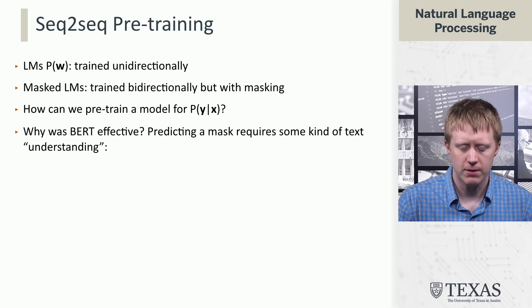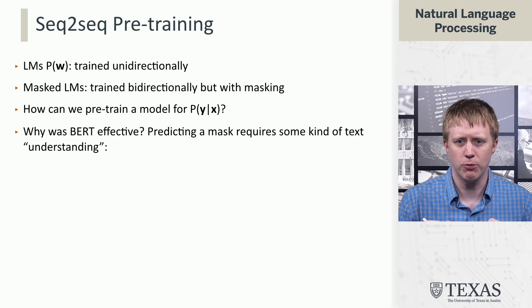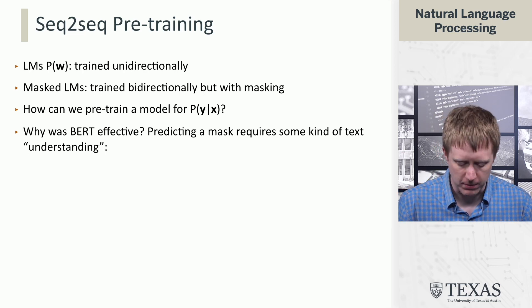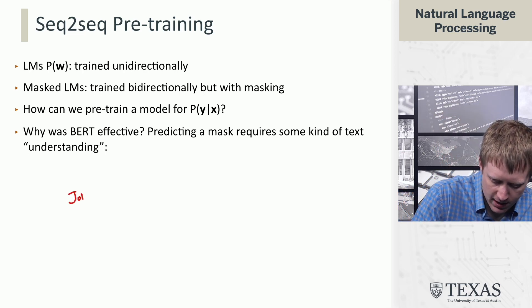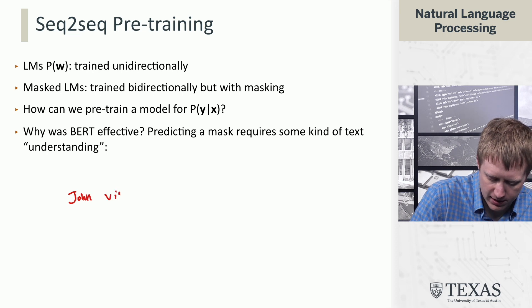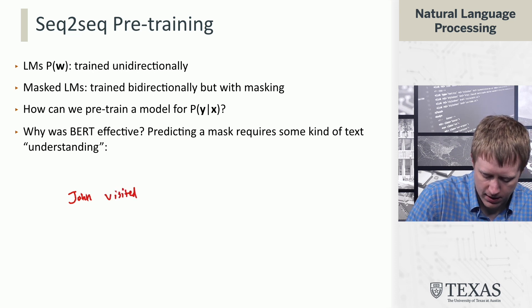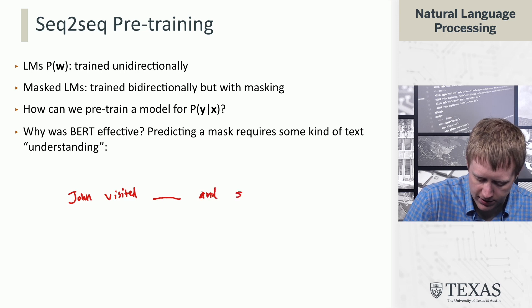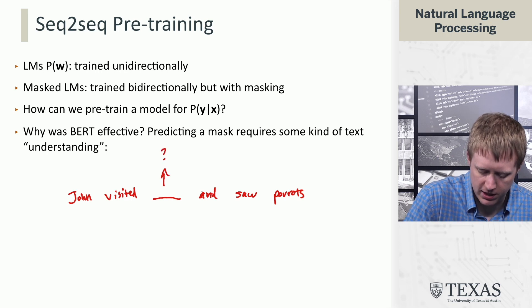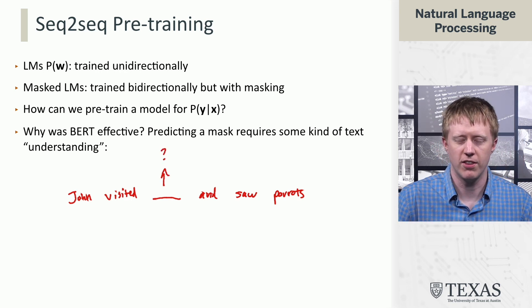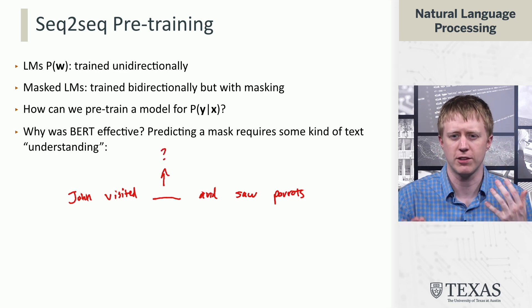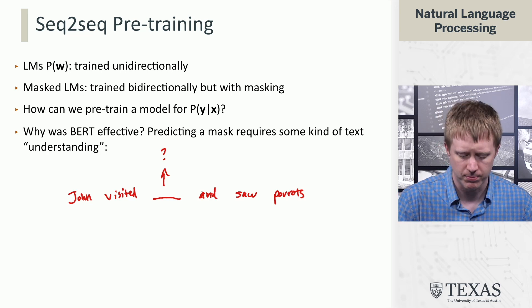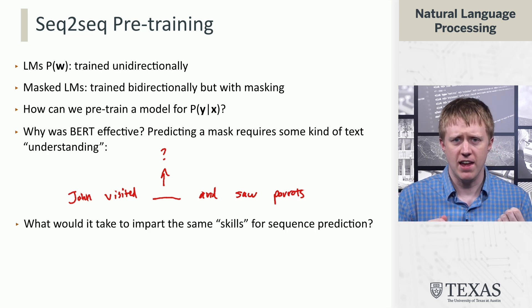We could think a little bit about why BERT and its variants were effective. One reason is that the way that we did masking required some kind of understanding. Like if we said 'John visited blank and saw parrots,' making a prediction there required the model to understand what kinds of places you visit and where you might see parrots. We could think about the same kind of skills from the perspective of sequence prediction.